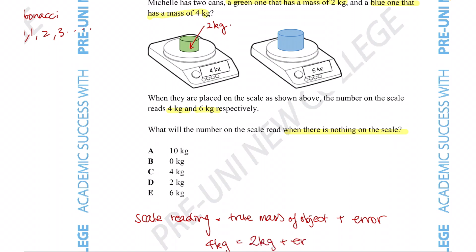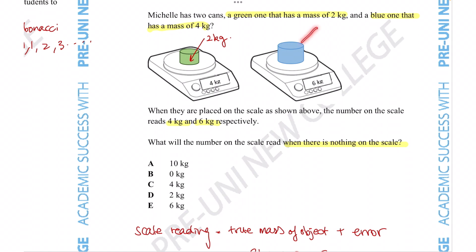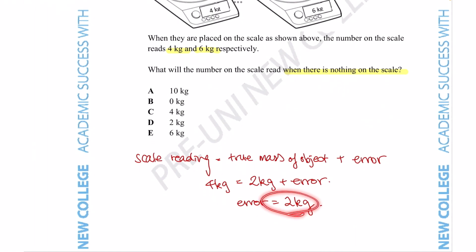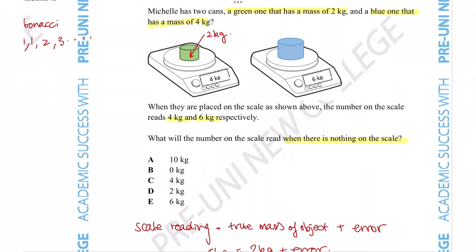Now we need to see if this error is going to be the same for every time you put a mass on top of it, because for all we know this error could be proportionate to the mass you place on the object which would complicate things. So let's just double check by looking at the second case scenario.